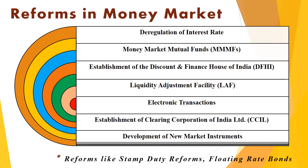The last major reform is the development of new market instruments. The government has consistently tried to introduce new short-term investment instruments like treasury bills of various durations, commercial papers, and certificates of deposit into the money market. Apart from these, stamp duty reforms and floating rate bonds are some other prominent reforms. With the help of these recent reforms, many of the shortcomings of the money market have been removed, though it still has a long way to go.